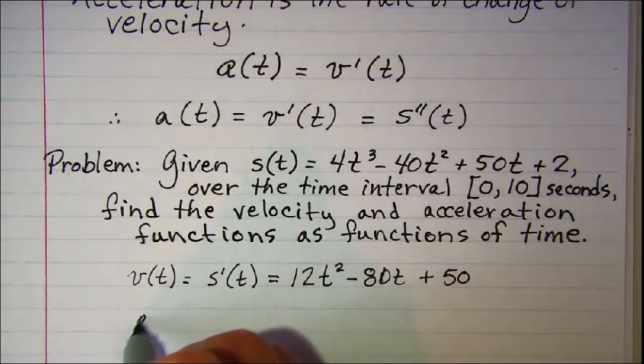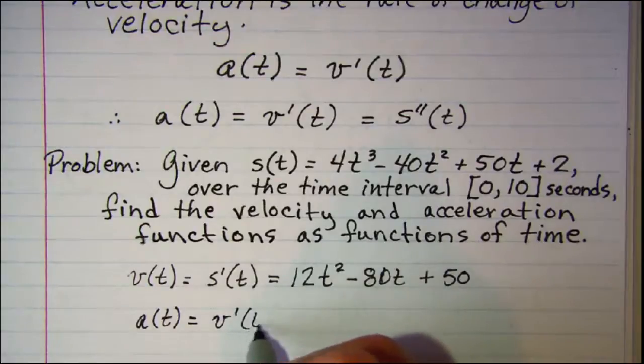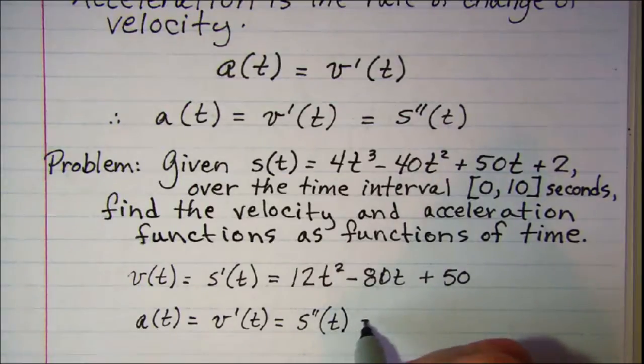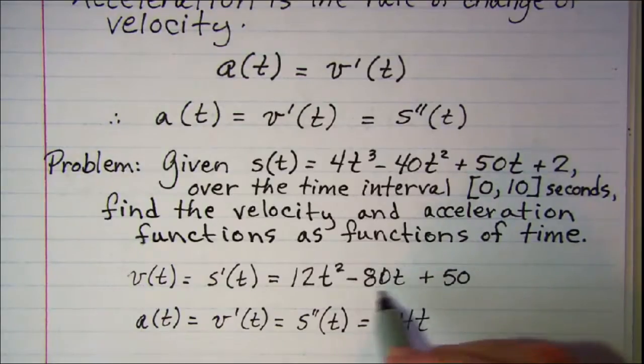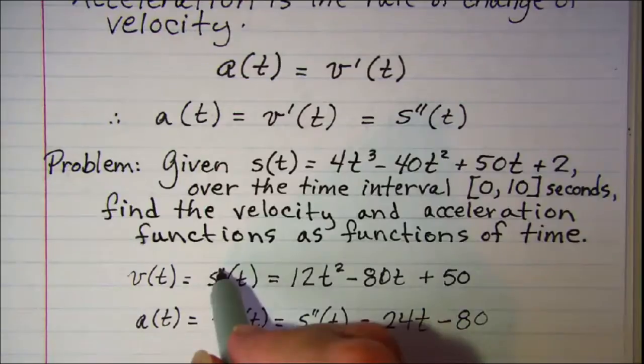Our acceleration function is the derivative of our velocity function and therefore the second derivative of our position function, so it is 24t minus 80.